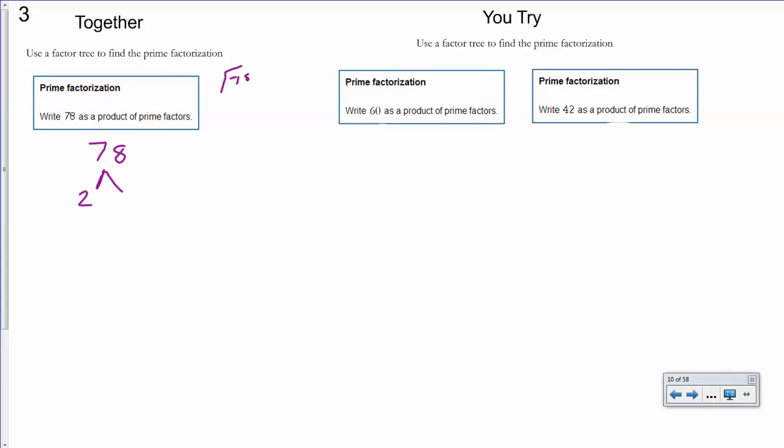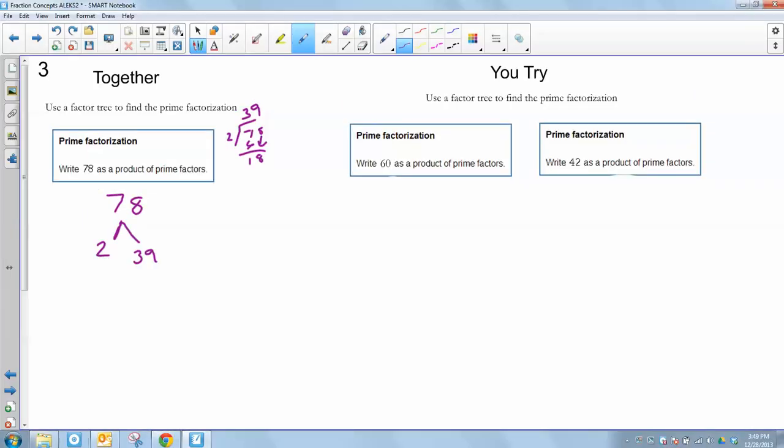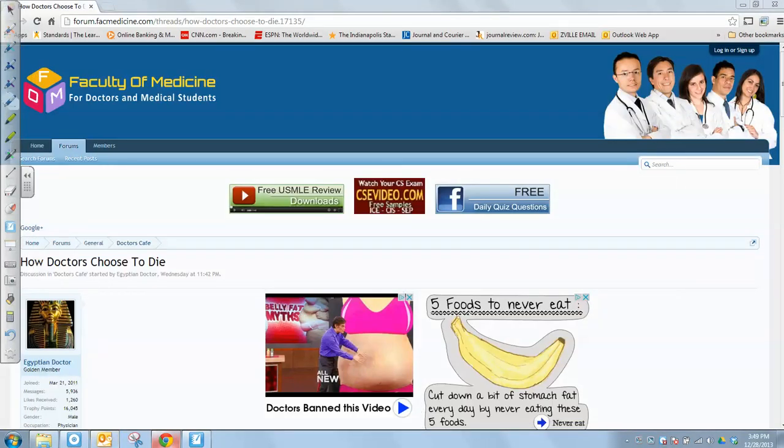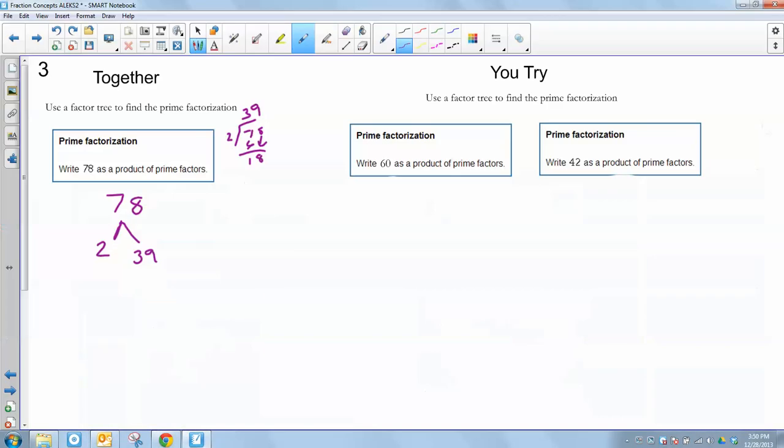So 78 divided by 2 gives me 39. And then my 2 is a prime number, so I'm going to go ahead and circle him.